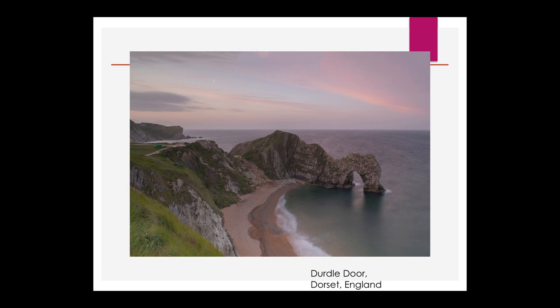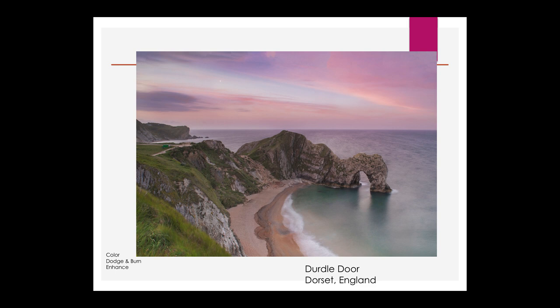This next photo is one of my favorite places — Dorset, England. We go there pretty often with our groups. This photo of Durdle Door was taken at 4am for an early morning sunrise. I love the pastel skies, but it's a little bit muddy. So I was able to bring out the color by using the color tool, dodge and burn, and then punched up the sky with the enhance tool.